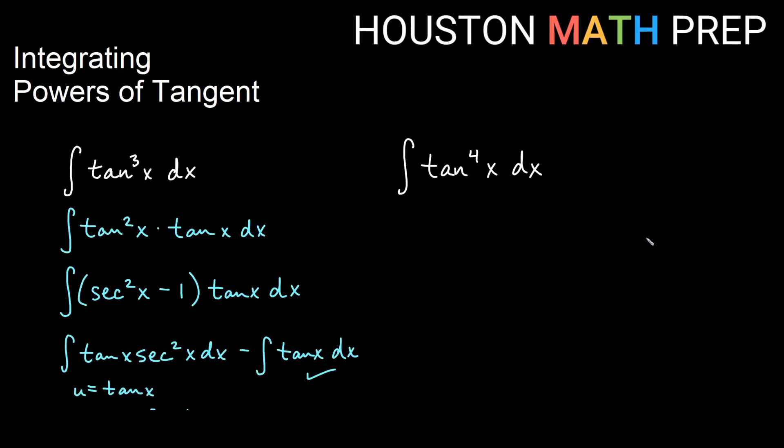Our last one here is tangent to the fourth x. Your tangent spidey senses may be telling you I should think of this as tan squared x times tan squared x, and I would agree with you. Maybe we change both of them. Maybe we change only one of them. If we think about trying to do a u du situation, we'll need both some tangents and some secants. So I'm going to just try changing only one of them.